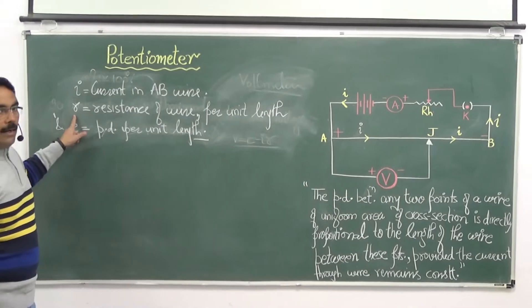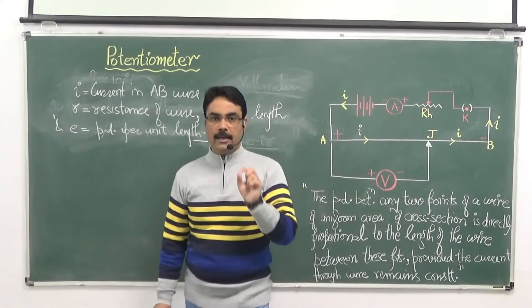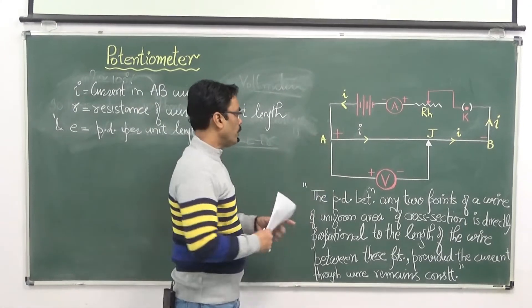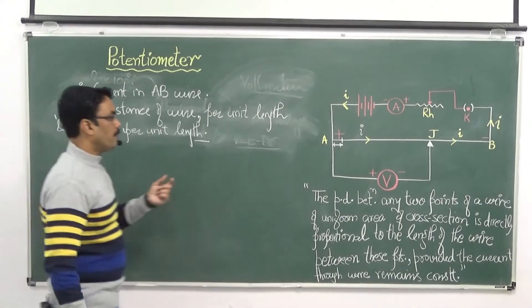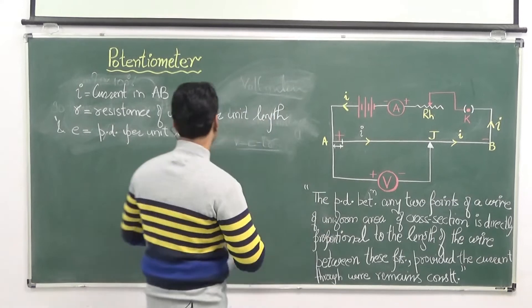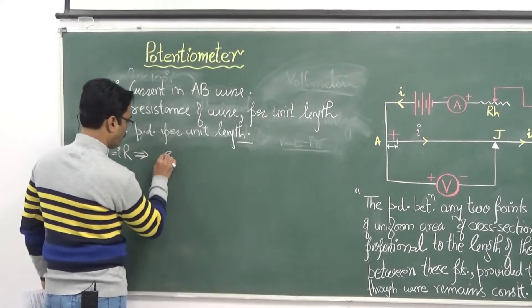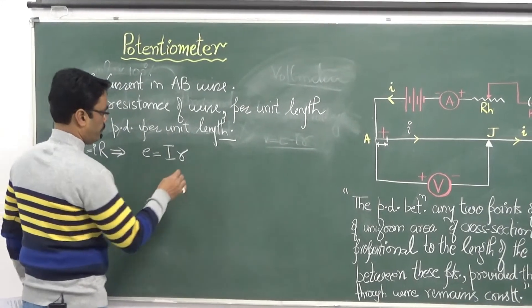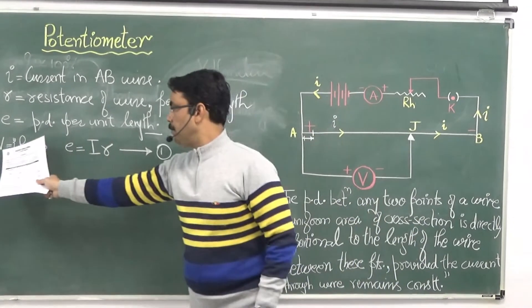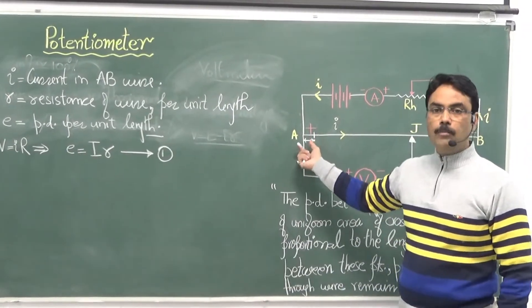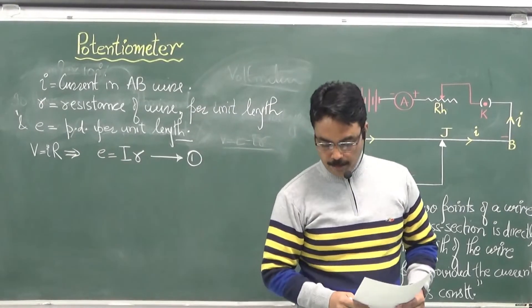So as we have assumed, I is the current available in this upper part of the circuit. So can we write down, I is the current in AB wire. Now assume R that is the resistance of wire per unit length and small e is potential drop per unit length. Now students can you correlate these two things first before going to the formula? Humne kaha ki I is the current to I to constant current hai jo ki flow hogi is wire branch pe. Small r that is the resistance of wire per unit length. It shows ki AB ki ek certain length hai lekin uski unit length ka resistance kitna hoga?